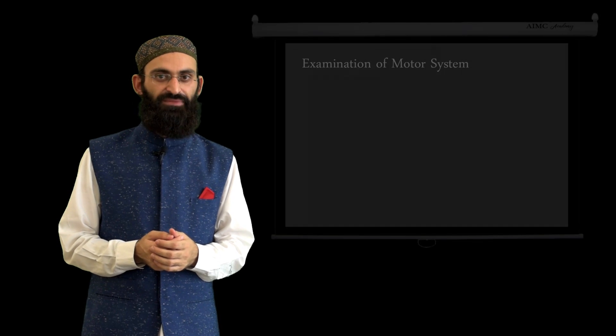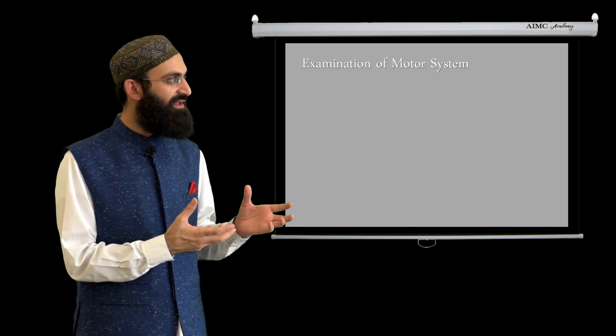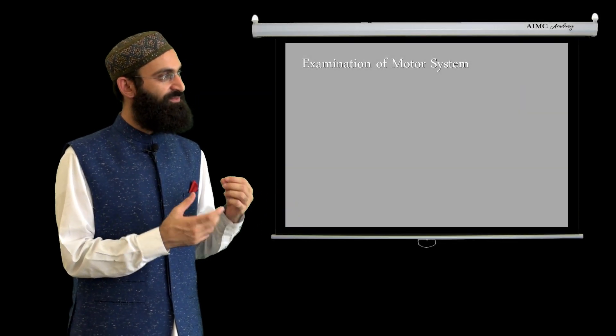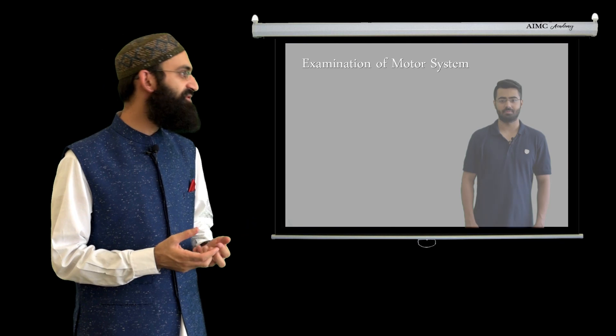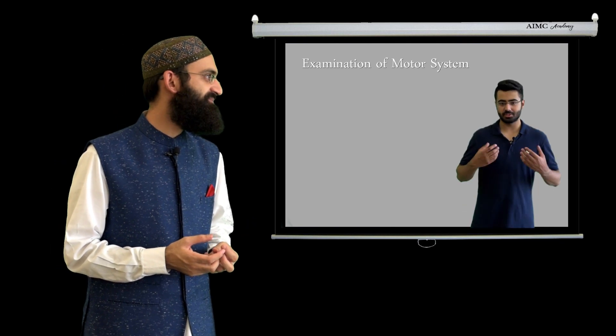In cases of motor weakness, the first question we need to address is whether it's a lower motor neuron type weakness or an upper motor neuron type weakness. This is determined by performing the examination of the motor system. Let us ask Danish what are the components of examination of the motor system.